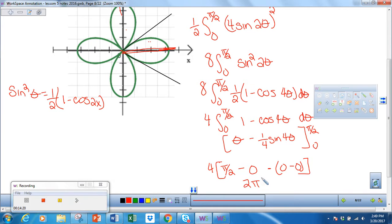That is the area of just one curve. To get the area of all four petals, I would multiply this by four. So the area of all four petals is 8π.